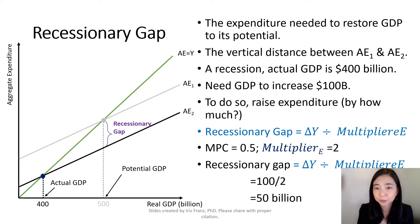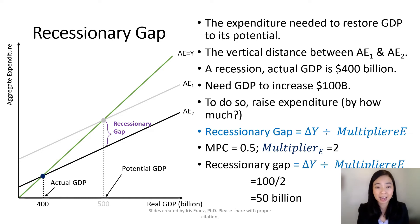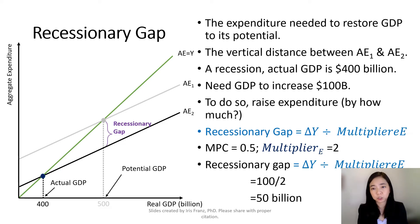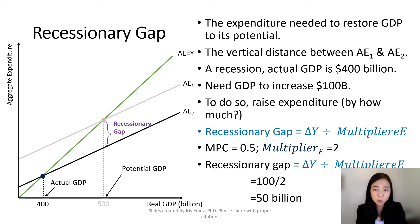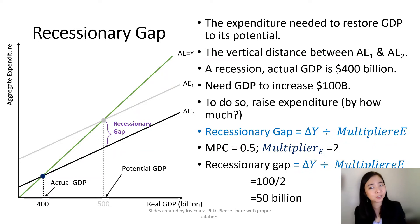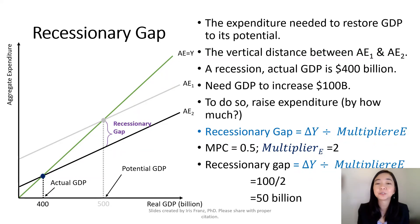In our example, our potential GDP is $500 billion and our current actual GDP is $400 billion due to a recession. So we want our GDP to increase by $100 billion. So how much aggregate expenditure do we need to increase in order to restore our economy? That will be our recessionary gap.